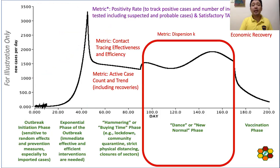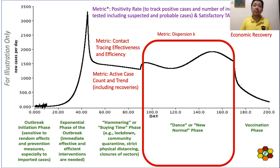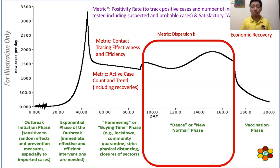After that, if we are already ready and our healthcare capacity is ready to provide optimal care, we can have a phased reopening of our economy. We can also have different metrics here, like the testing positivity rate — to know the percentage of people tested that will be positive — and the contact tracing effectiveness and efficiency, including the turnaround time. One of the most important metrics here is the number of active cases and the trend of active cases, as well as the trend in recoveries.